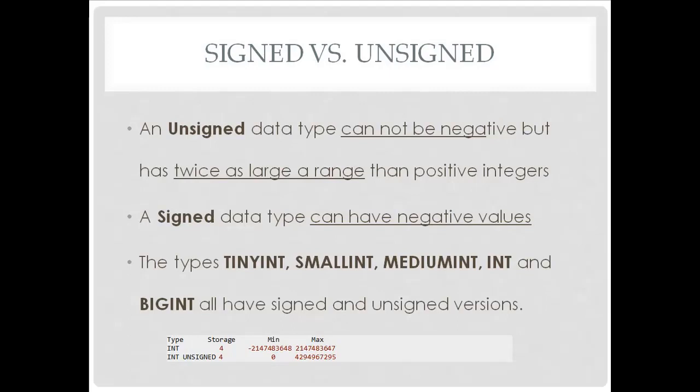Before we go into the basic data types from those categories, I want to talk about what signed and unsigned means. The numeric types — tiny int, small int, medium int, int, and big int — all have signed and unsigned versions. An unsigned data type can't have negative numbers, but it has twice as large of a range than signed data types in the positive direction.